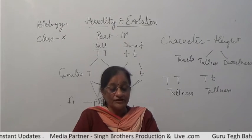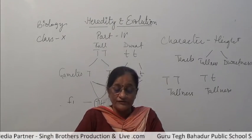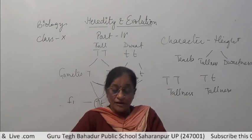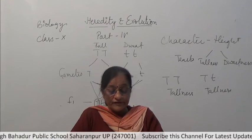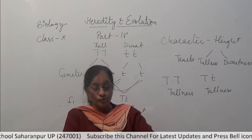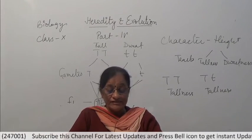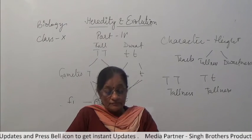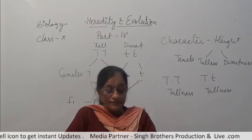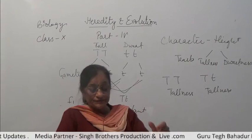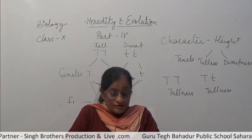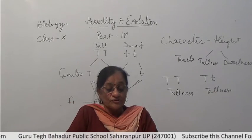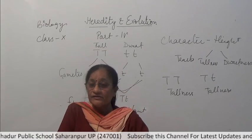The third rule given by Mendel is the principle of segregation. The two factors of a character are separated at the time of gamete formation, and each gamete gets only one factor for that character — meaning gametes are always pure for their character. For example, in the F1 generation, gametes with capital T are pure for tallness, and gametes with small t are pure for dwarfness.